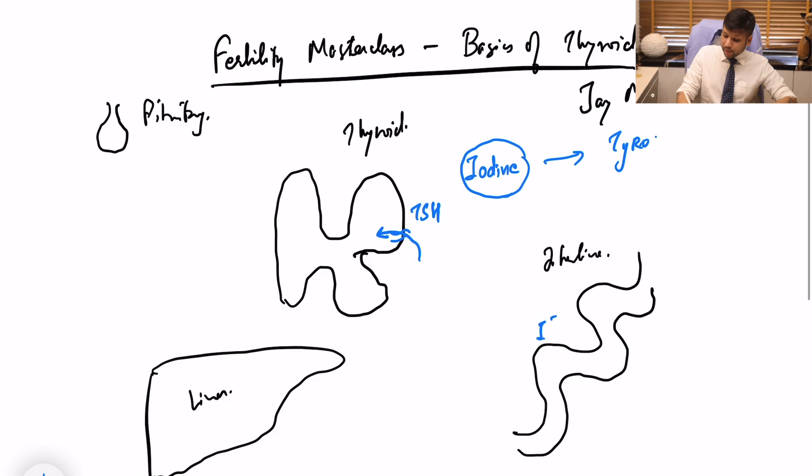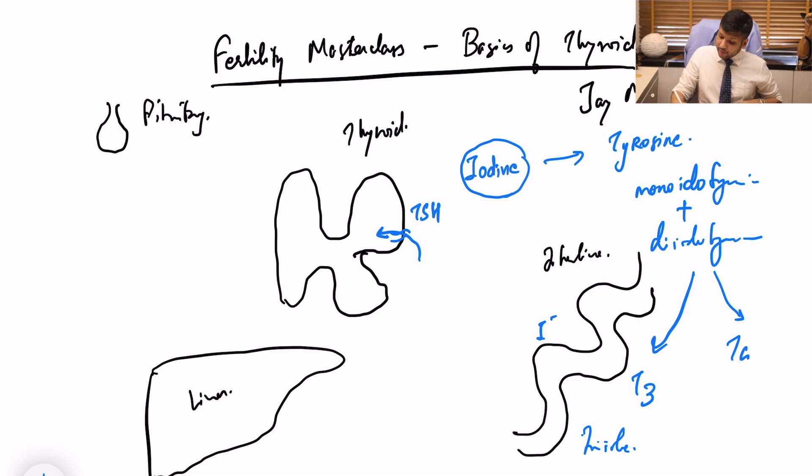And when the iodide goes inside, it binds to a protein called tyrosine which is present in the thyroid. Now this basically binds in the form of monoiodotyrosine or diiodotyrosine. So that means basically one iodide molecule or two iodide molecules. Now when these two combine, monoiodide and diiodide combine, they can either give rise to formation of T3 which is triiodothyronine, or it can give rise to T4 which is thyroxine. This is our primary understanding.